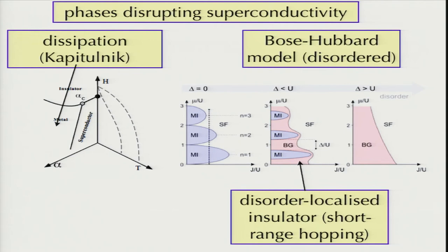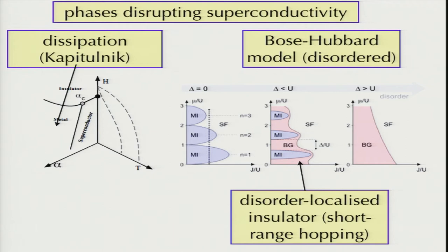In this problem, it seems that when you destroy the superconductor — and its properties are well documented to be Kosterlitz-Thouless — what comes about is not an insulator but something that still has Cooper pairs and has finite conductivity. This talk is about what is that phase and how would you understand it.